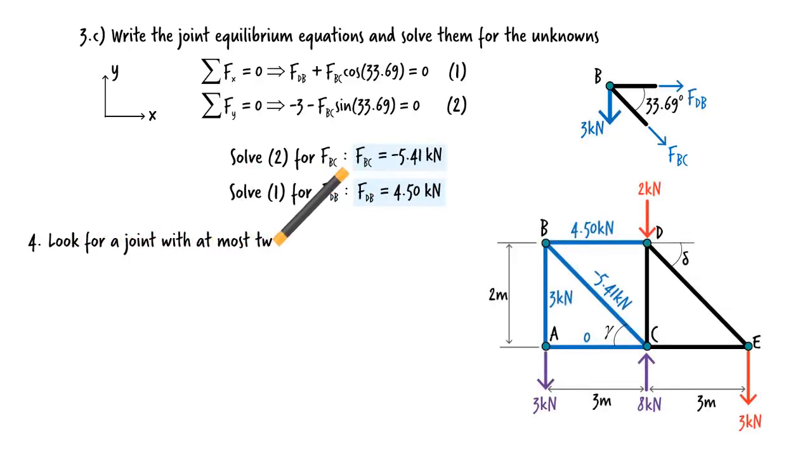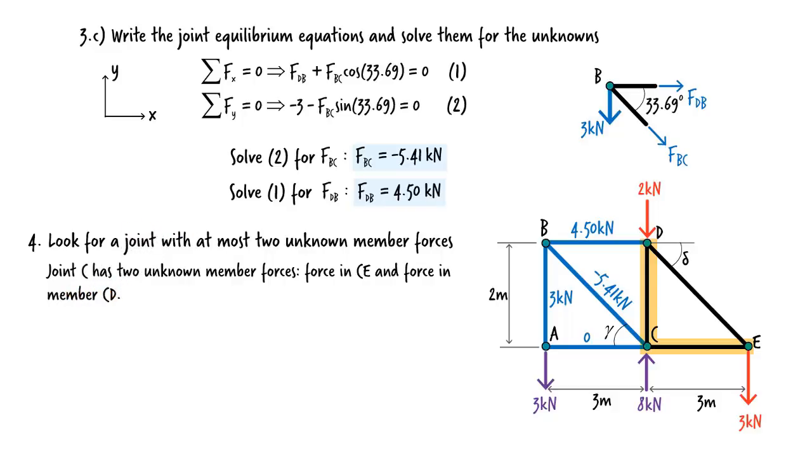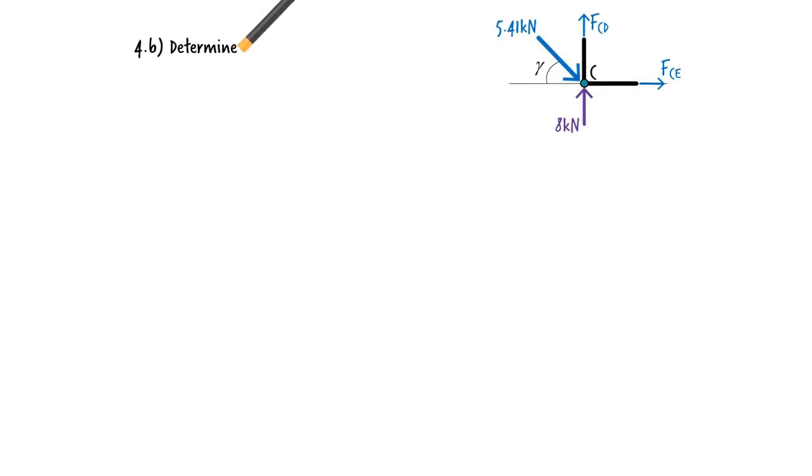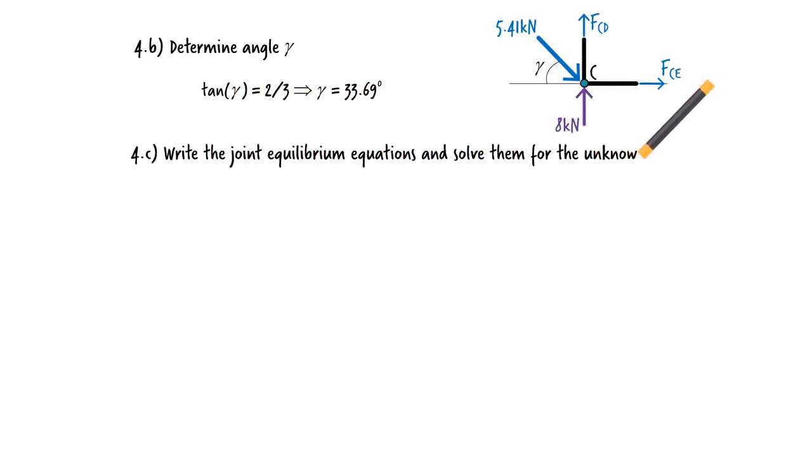Three unknown member forces remain. Let's use joint C to calculate FCD and FCE. Here is the joint's free body diagram. We need to calculate angle gamma here. It equals 33.69 degrees. Now let's write the equilibrium equations and solve them for the two unknowns.